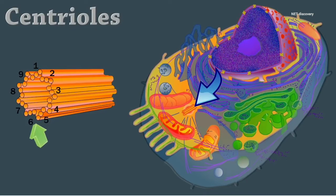They organize a microtubule network during mitosis to form the spindle, asters, and basis of cilia and flagella.